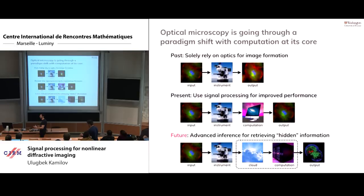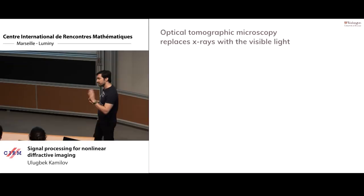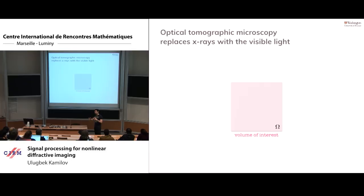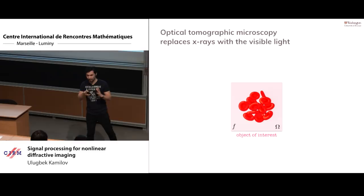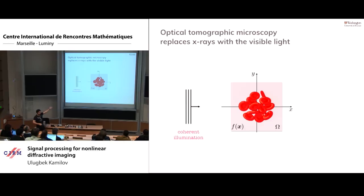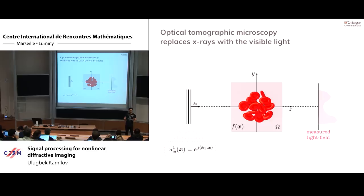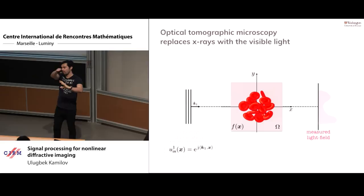I want to talk about one particular type: the optical tomographic microscope. Like X-ray tomography, I have a volume containing an object, and at every location inside I want to know a number — the refractive index. We use coherent illumination, basically a laser modeled as a plane wave, which goes through the object and interacts with it. Somewhere in space, a recording device collects the wave coming out, which can be in transmission or reflection.